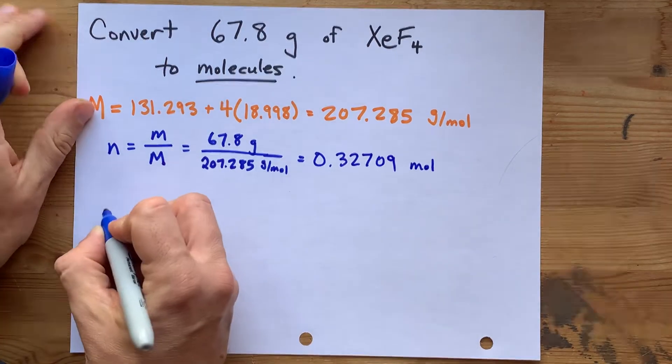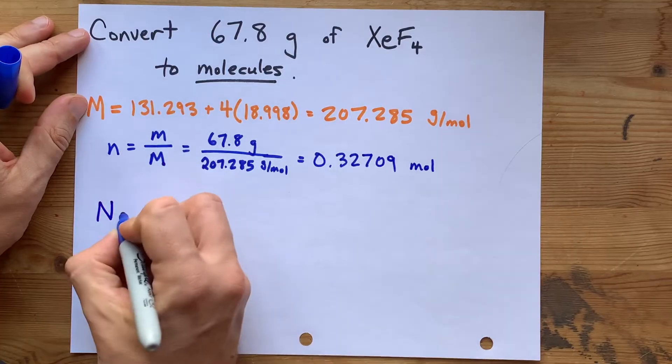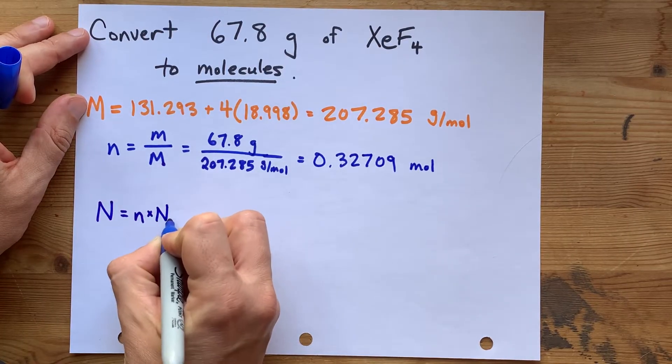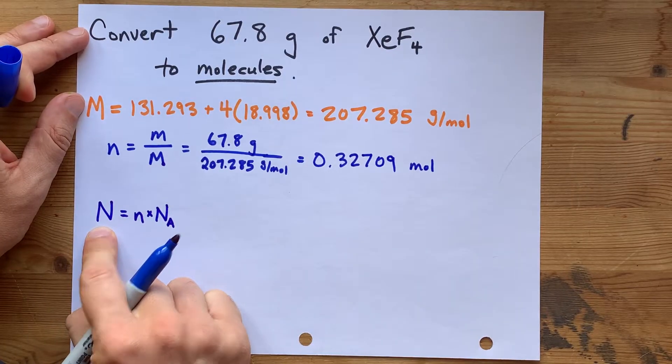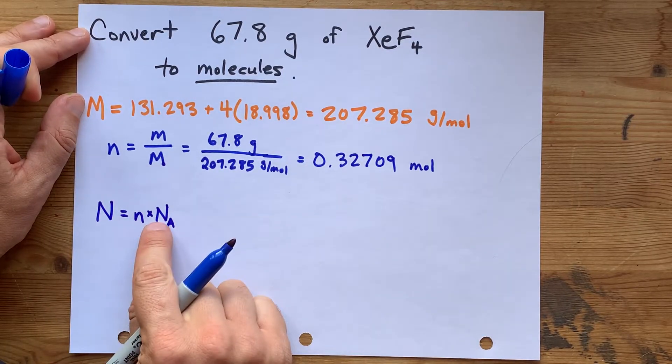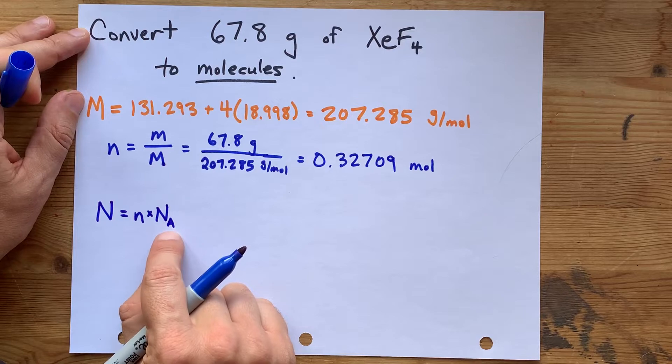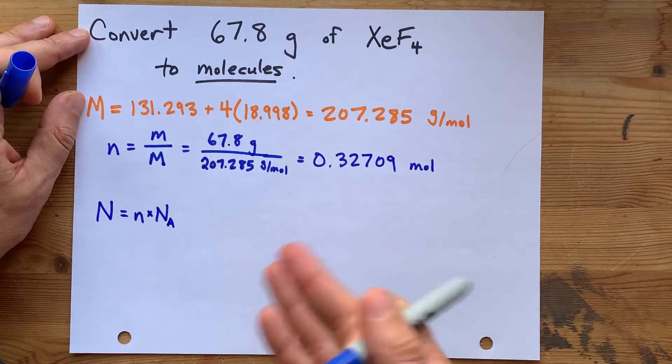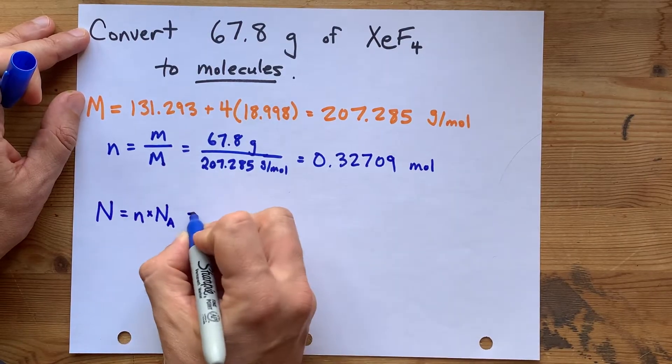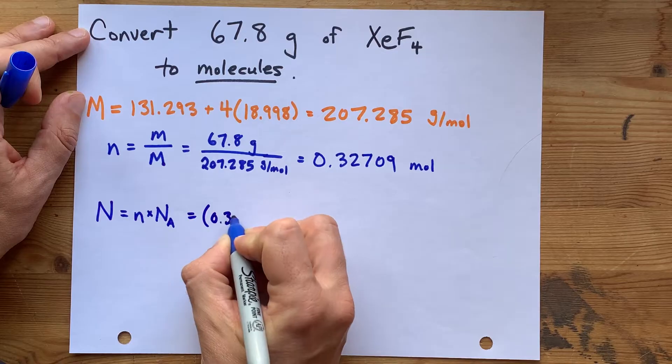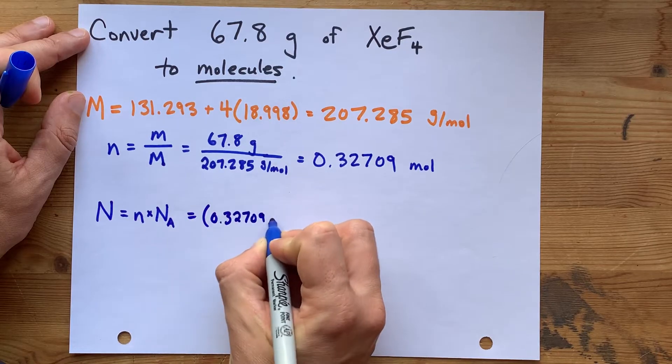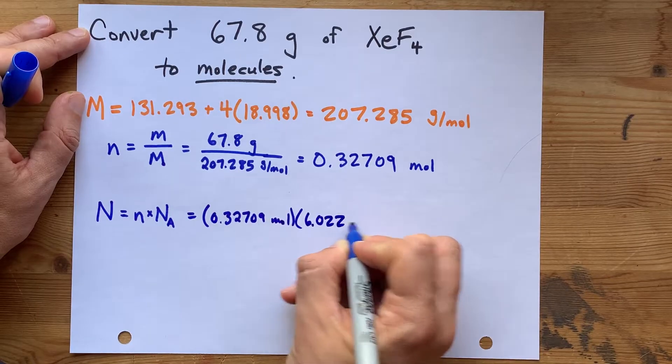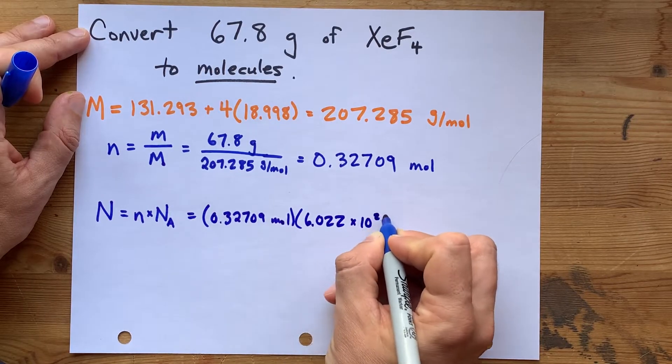Now, there's a formula for that as well. The number of molecules is the number of moles times Avogadro's number. Capital N is number of molecules. Capital N with a little subscript A is the very special Avogadro's number, the number of particles in a mole of something. What we have is 0.32709 moles of stuff, and we are going to times it by 6.022 times 10 to the power of 23.